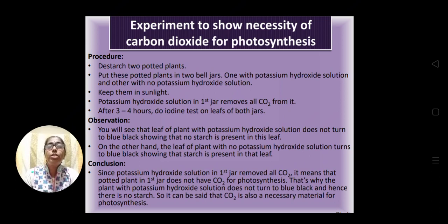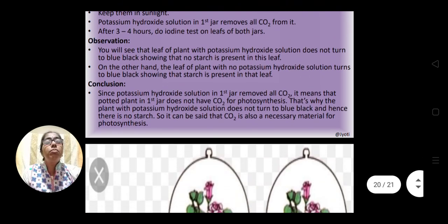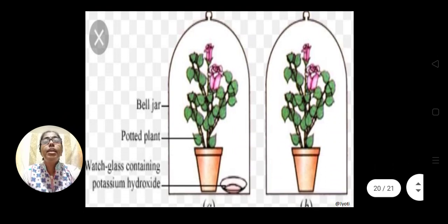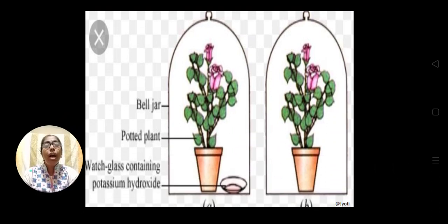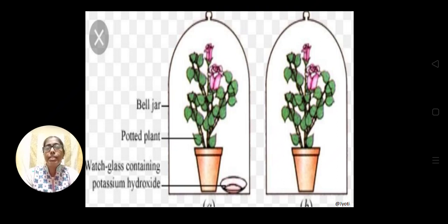Keeping the plants in darkness means no photosynthesis occurs in any of the leaves, so the plants become destarched — no starch synthesis. Take out both potted plants from the dark room and place them inside the bell-shaped jars. On the left side, potassium hydroxide is kept in a petri dish inside the bell jar. On the right side, nothing extra is kept inside the bell jar. Both are then kept under sunlight.